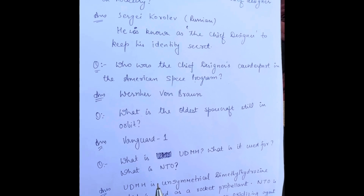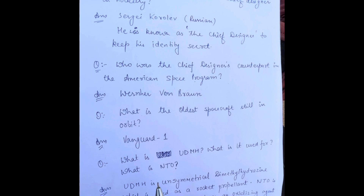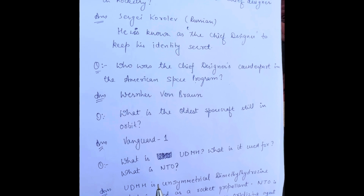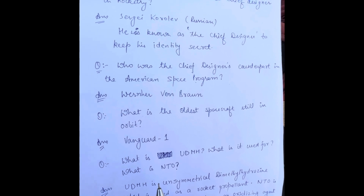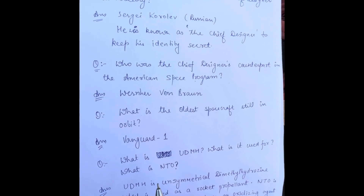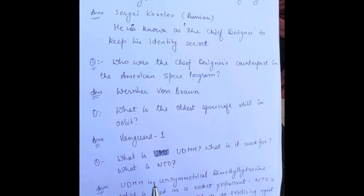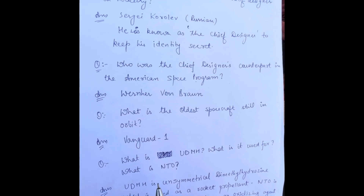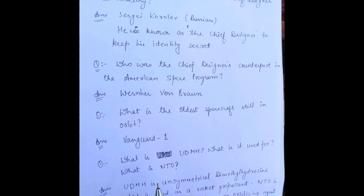What is the oldest spacecraft still in orbit? Vanguard 1 is the oldest spacecraft which is still orbiting the Earth.